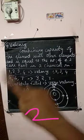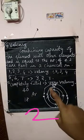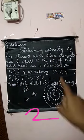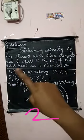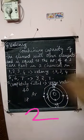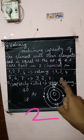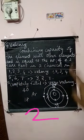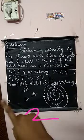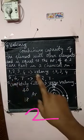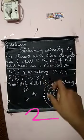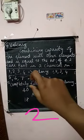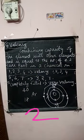If valence electrons is 5, valency is 3. If valence electrons is 6, valency is 2. If valence electrons is 7, valency is 1. So: 1, 2, 3, 4 valence electrons give valency 1, 2, 3, 4 — no change. 5 valence electrons gives valency 3; 6 valence electrons gives valency 2; 7 electrons in the outermost shell gives valency 1.